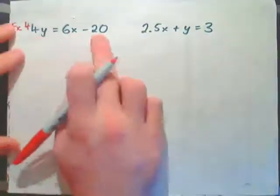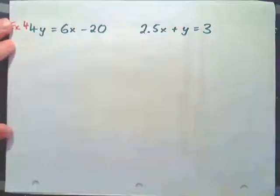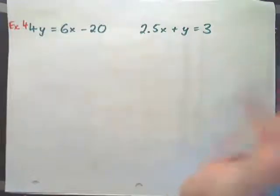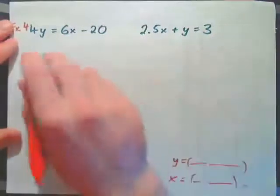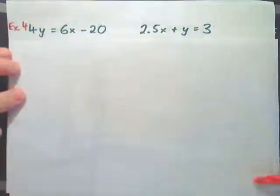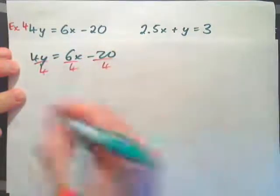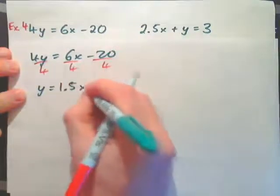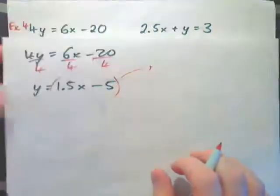Example 4: 4y equals 6x minus 20 and 2.5x plus y equals 3. This time we don't have apples and bananas, but it's the same procedure — we need to find the values of x and y. Solving by substitution means we need either y equals something or x equals something. One option is to divide everything in the first equation by 4, giving y equals 1.5x minus 5, then substitute into the other equation.